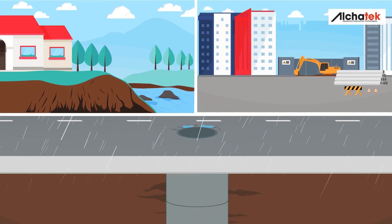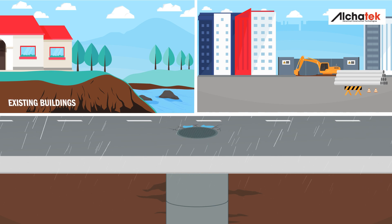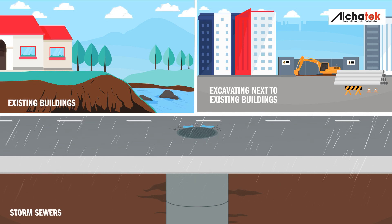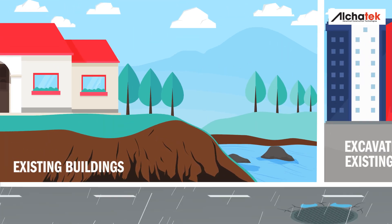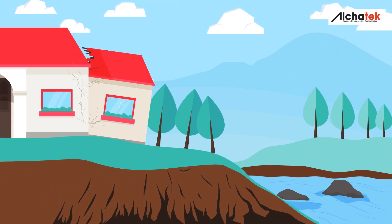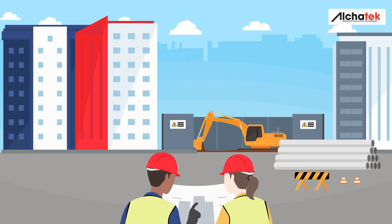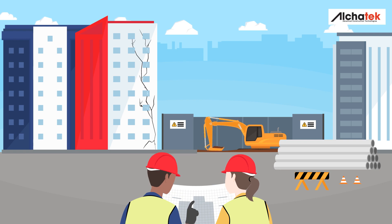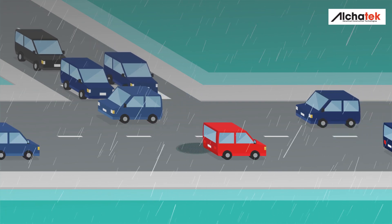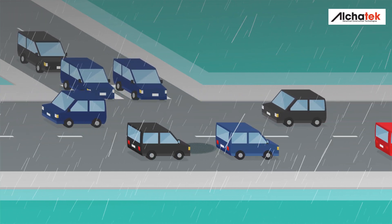Here are the common situations where unstable soil can be a problem: existing buildings, excavation next to existing buildings, and storm sewers. Weak soil under any structure or slab increases the risk of settling and structural damage. Excavating next to a building can weaken the soil that supports the foundation, potentially causing structural damage.